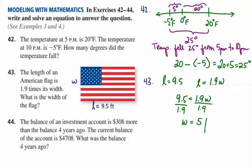Or in this case, units of measure would be 5 feet. Now, we could check that. We know that the length has to be 1.9 times the width. So if you multiplied 1.9 times 5, you would get 9.5. And so that is our answer for number 43.